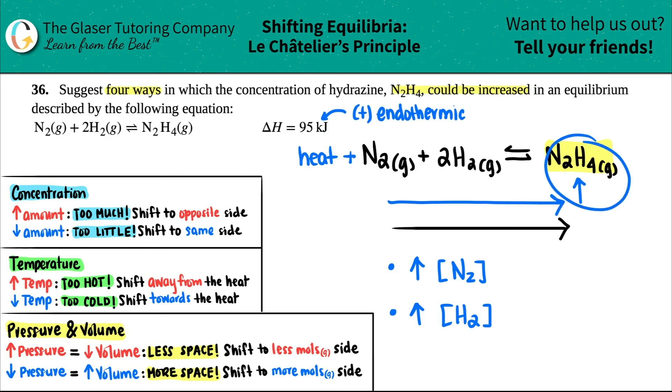It's the same arrow as what we were saying before. So I could also increase the temp. So that's three out of the four ways.